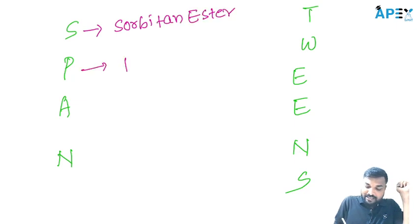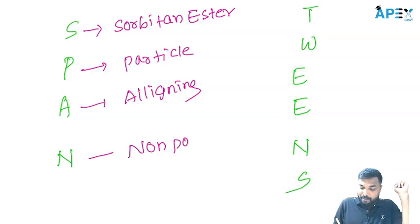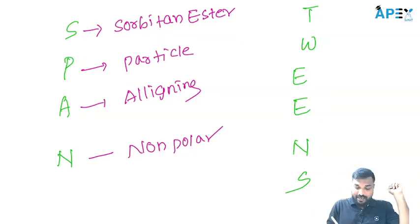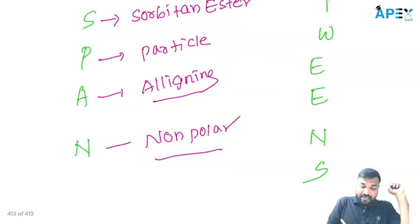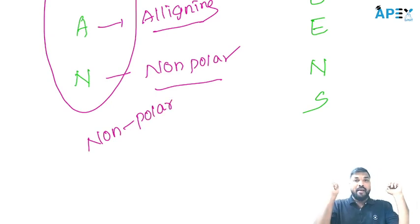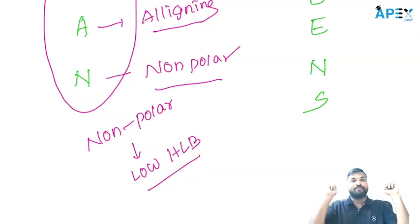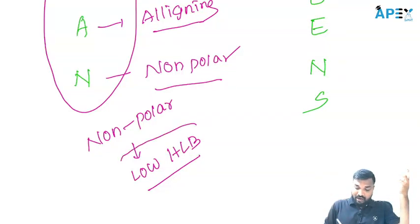P means it is the particle — sorbiton ester particle. It is aligning N — non-polar. How to remember this? Sorbiton ester particle aligning non-polar. Spans are of non-polar nature, meaning they have low HLB.